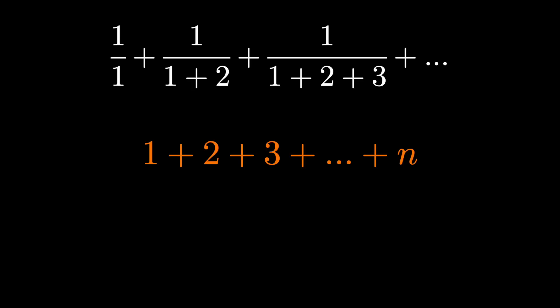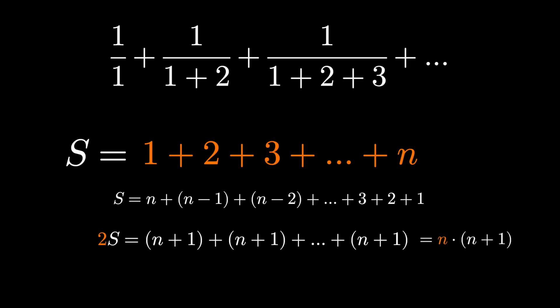We can solve this pretty quickly using induction, or more simply, write this sum as S backwards. Add it to itself so we get 2S, and the way things pair up is very nice, since we get n plus 1, n times, since there were n terms.